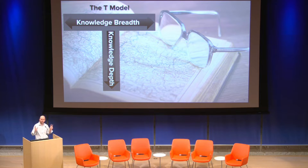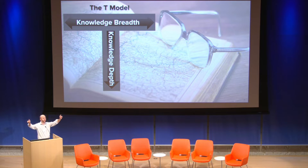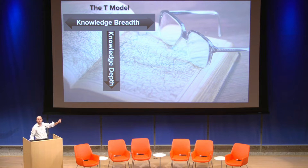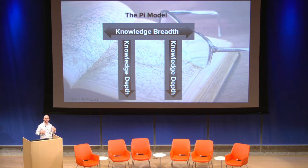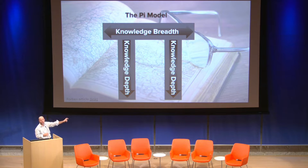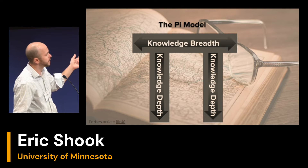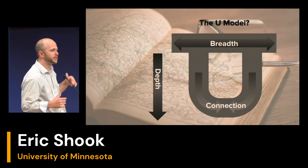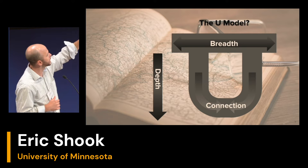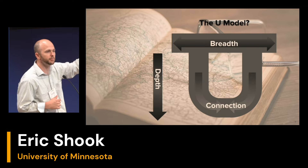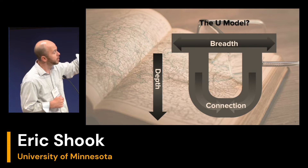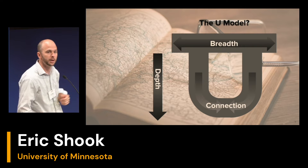Comparing against traditional educational models: the T-model, which everyone's familiar with even without knowing the term, is how universities are built — liberal education creates breadth of knowledge through general education credits, and a disciplinary degree builds depth in one area. For computational and data science, the Pi model introduces two legs of knowledge depth. The problem with both is that knowledge depth still sits in isolation. What we're really trying to build is the U-model, where knowledge is actually connected in a deep way — this is convergence, either within a single person or within a collaborative group.